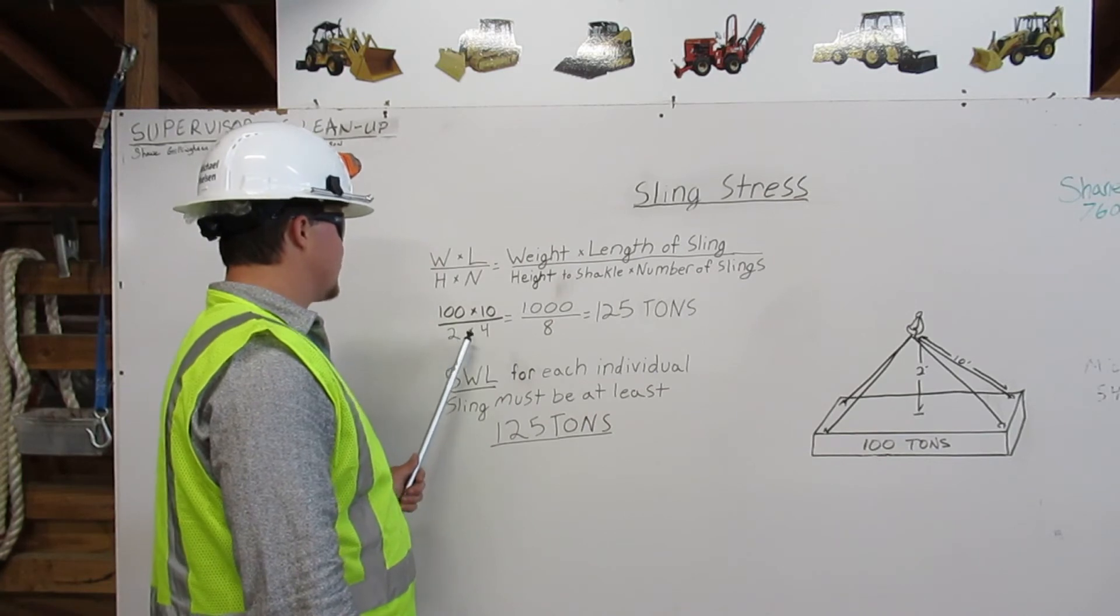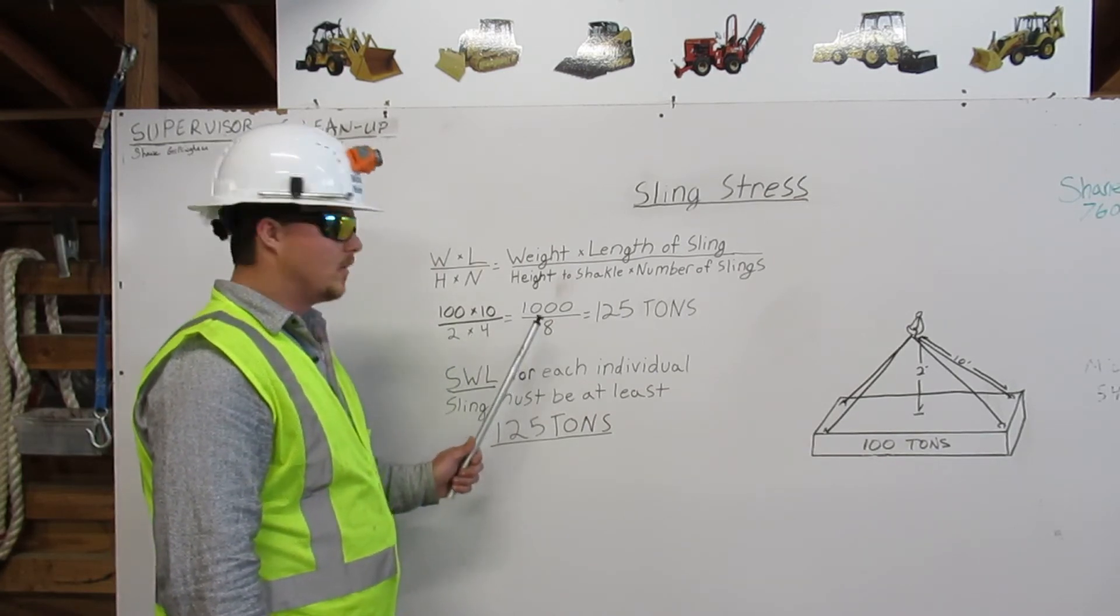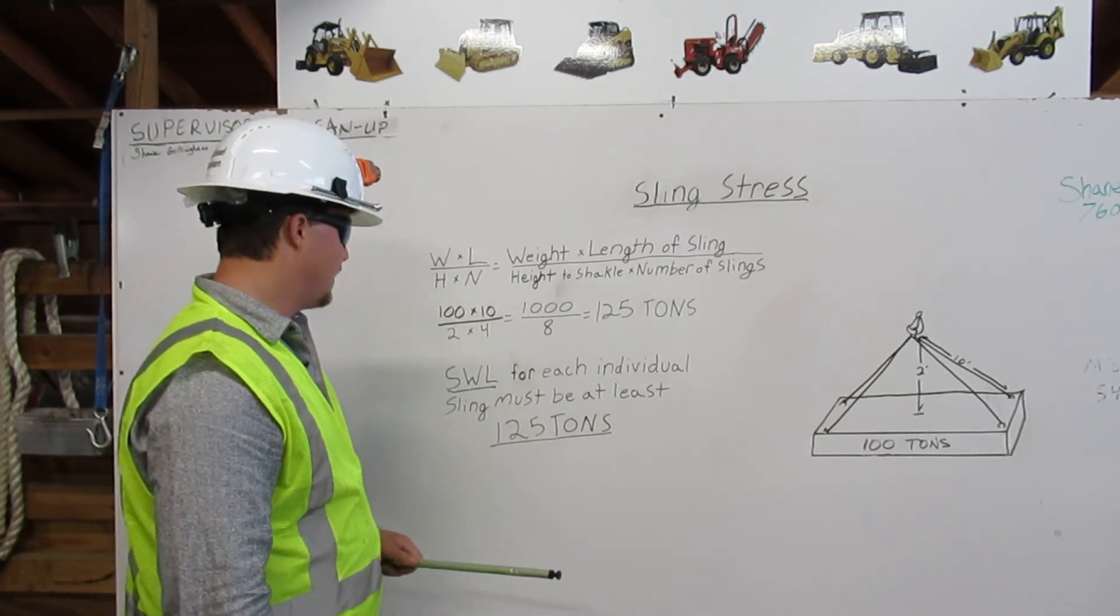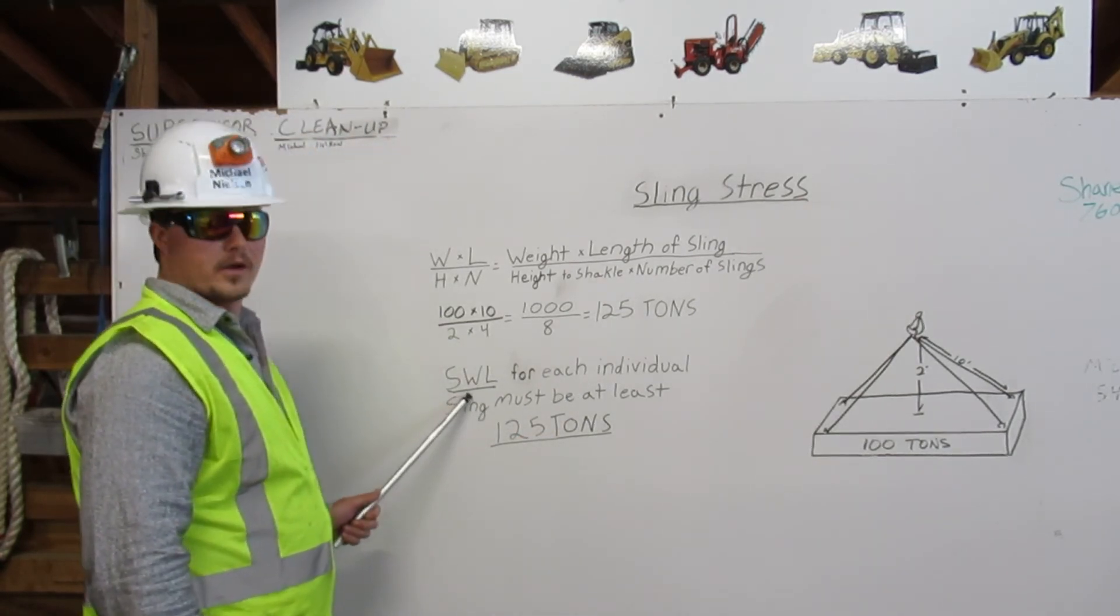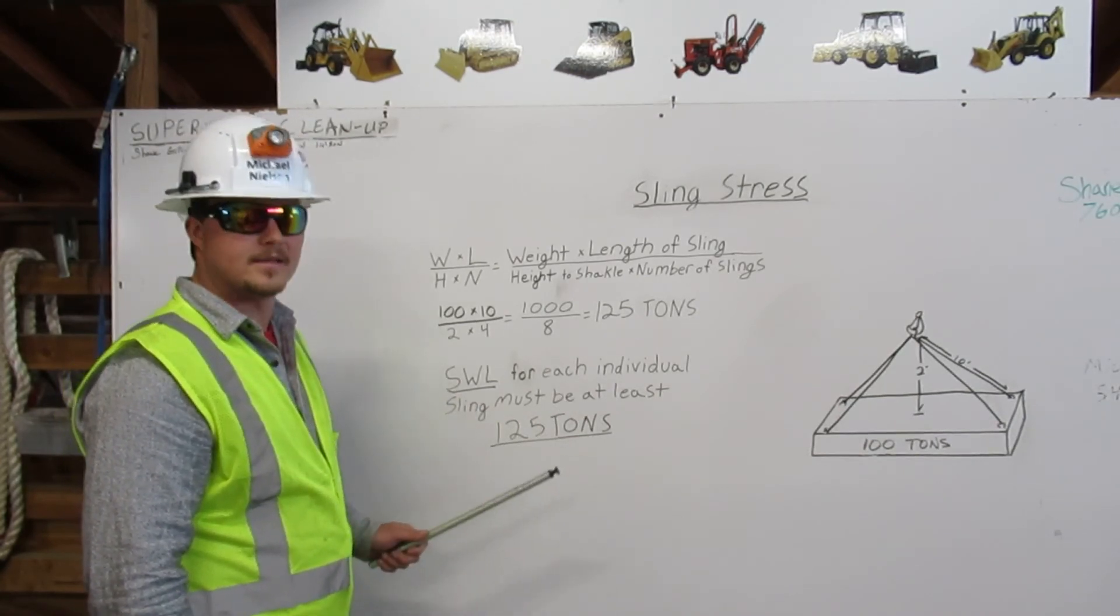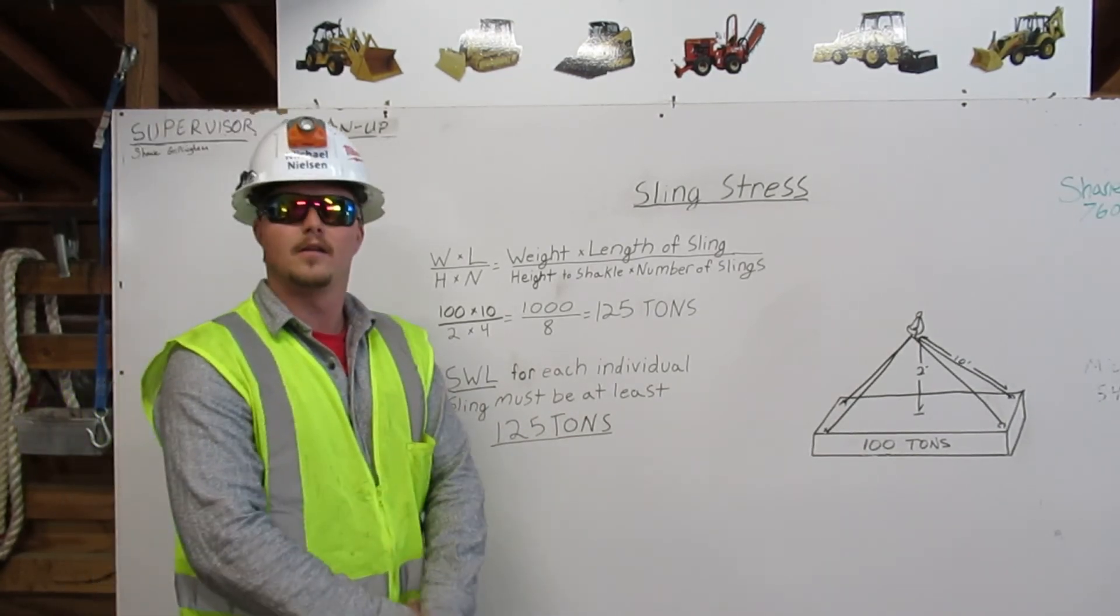Then the height times the number of slings is eight. One thousand over eight simplifies to 125 tons. Now we know that the safe working load for each individual sling must be at least 125 tons. Thank you.